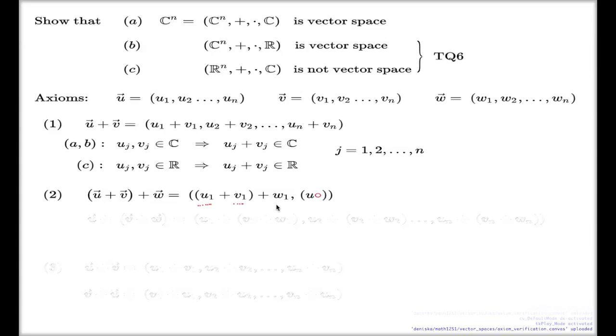First component of U plus first component of V plus first component of W. Second component, many other components, the last component, the nth component. This is the left-hand side of the associative law. This is the right-hand side of the associative law.